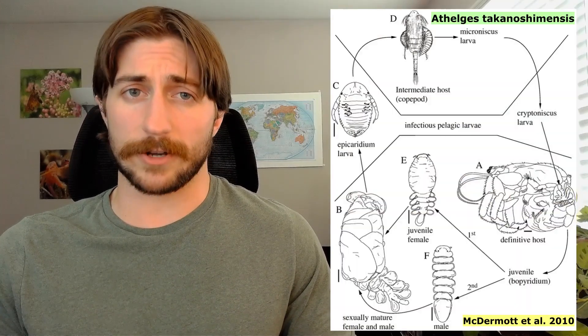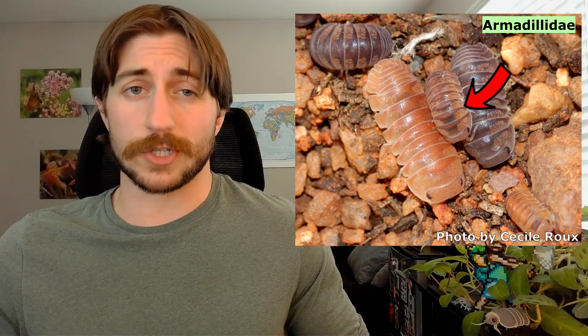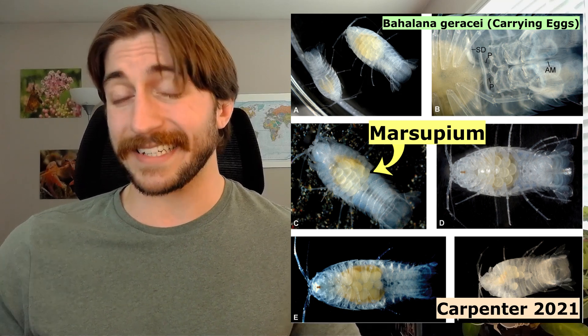Isopod life cycles can vary, especially in parasitic species. Many isopods undergo direct development — egg to juvenile to adult — where juveniles look like smaller versions of the adult. Parasitic isopods often have indirect development with distinct larval forms that look completely different from adults and may have different hosts. Female isopods have a pouch on their underside called a marsupium, where they lay and keep their eggs safe and moist. Even in terrestrial isopods, moisture is critical, and many can uptake water through their rectum to aid in water absorption.